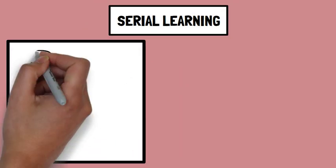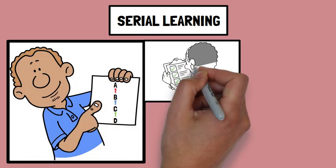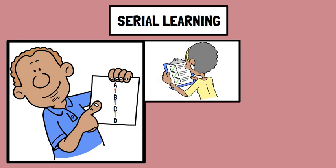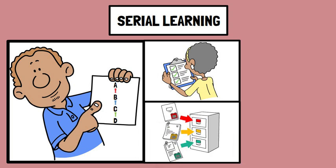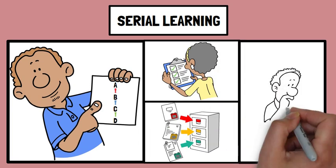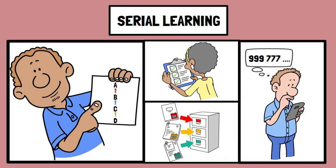Serial learning focuses on the sequential order of information. Think of learning a list of items in a specific order and being able to recall them in that same sequence later. This process relies on the brain's capacity to organize and store information in a structured manner. Serial learning is commonly used in tasks like memorizing phone numbers or remembering a set of instructions step by step, such as in a recipe.